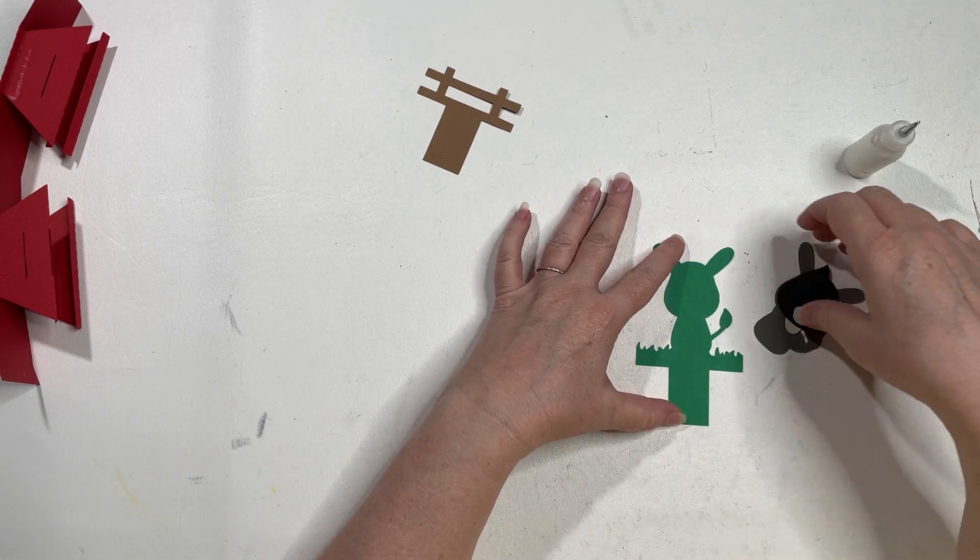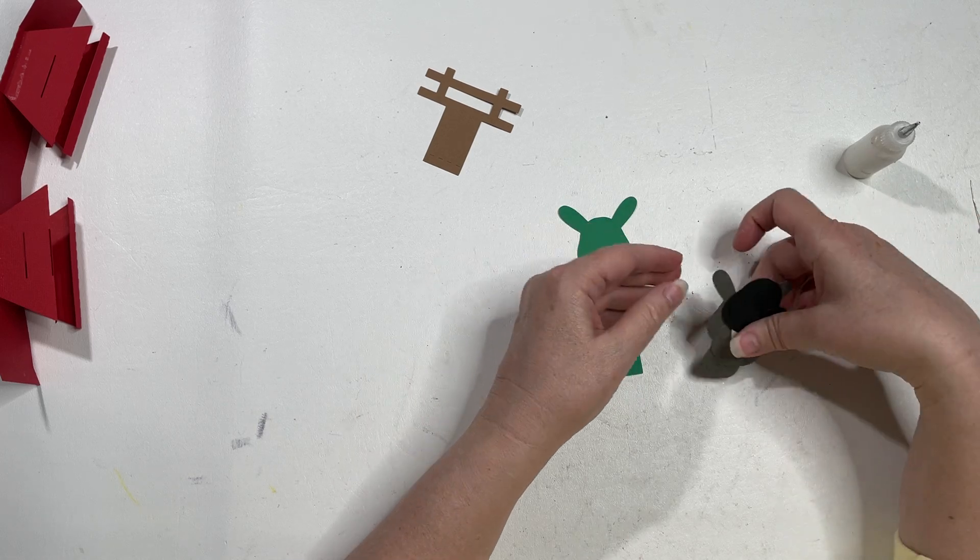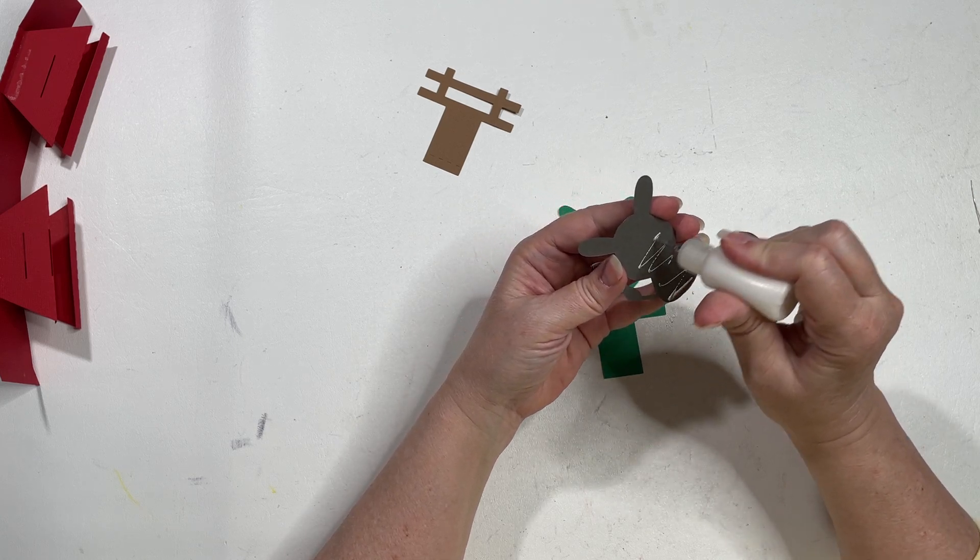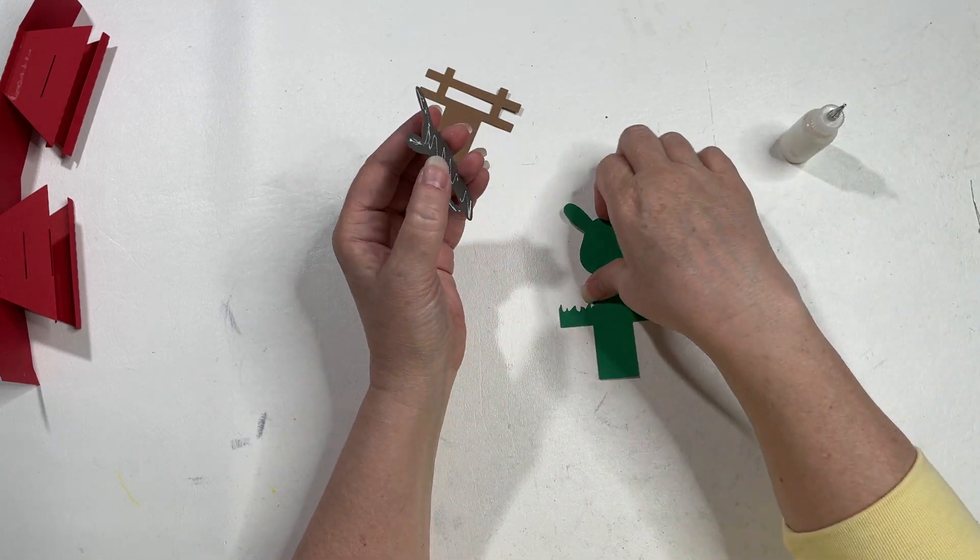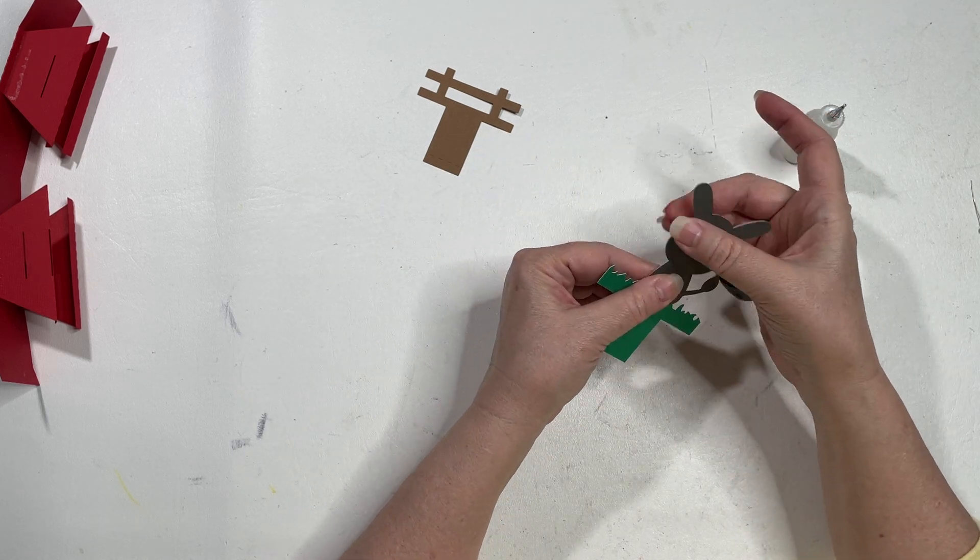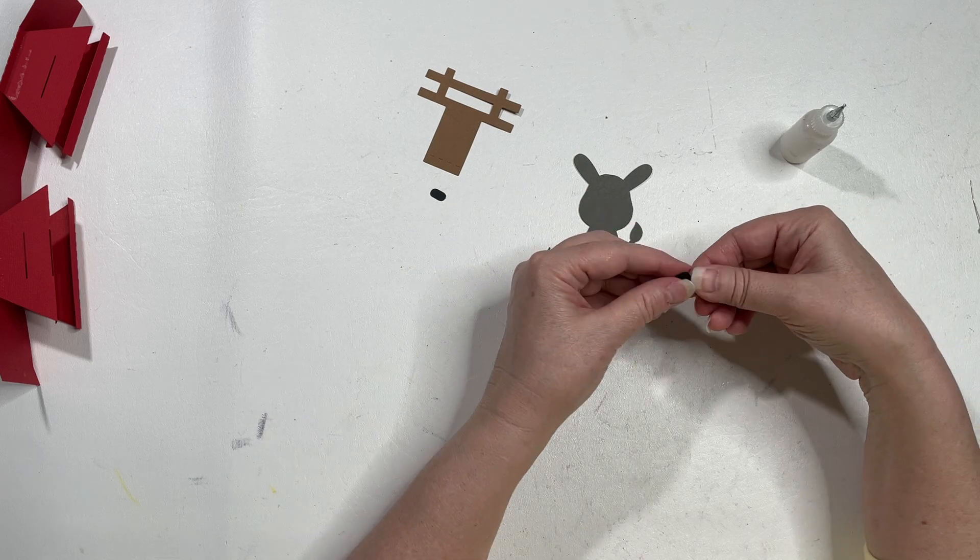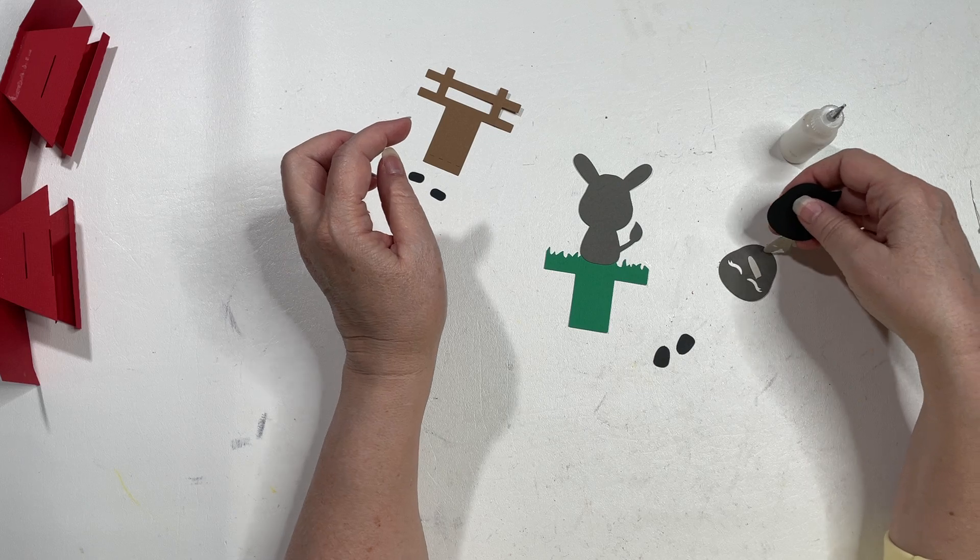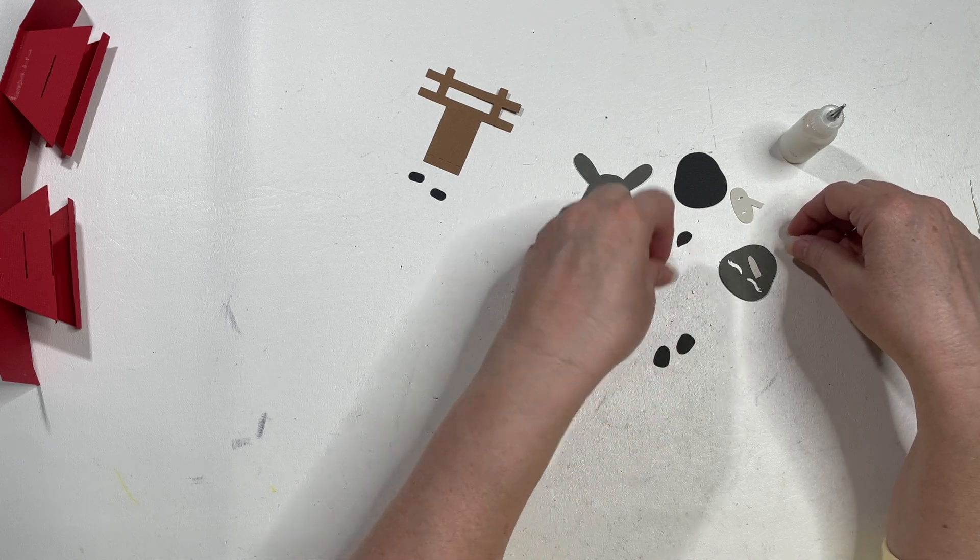So let's pull in the donkey. I probably should have picked a little bit lighter of a gray, a little bit darker than I had intended. His front hooves are actually going to go on the fence. Let's take a look at these other pieces here.